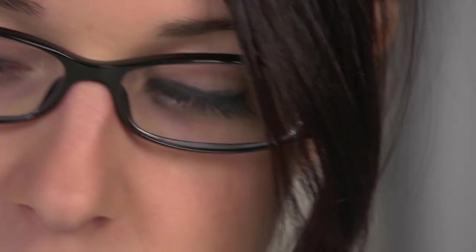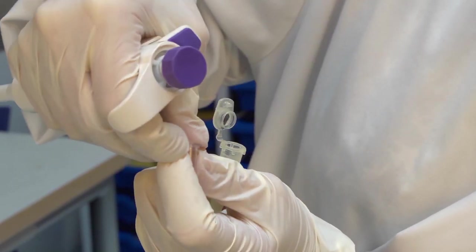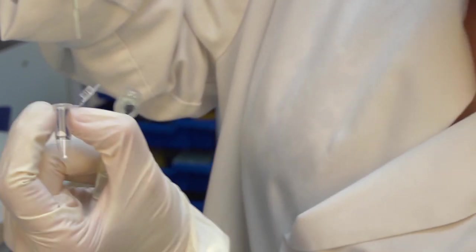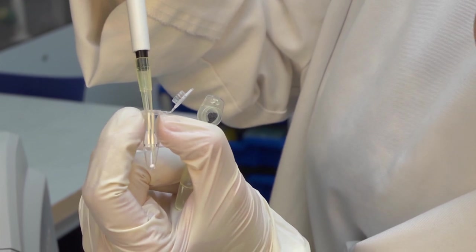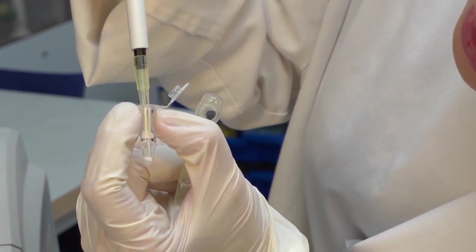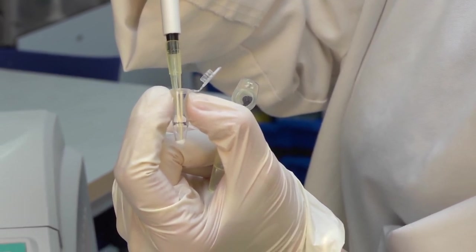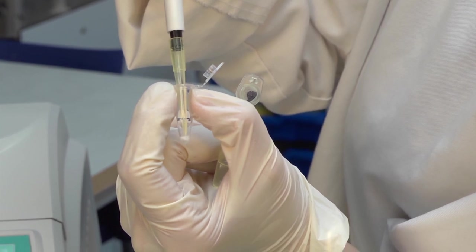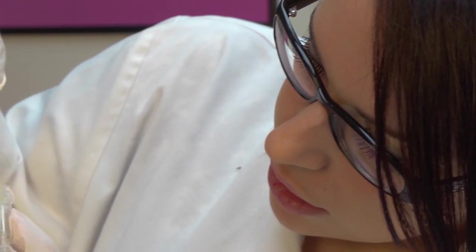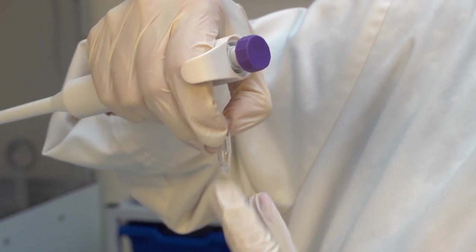To set up the reaction students need to add 22.5 microlitres of the primer mix. Simply pipette that out and add it carefully to the bead. Once you add the liquid to the bead it will start to dissolve, and if you carefully pipette up and down you'll see that it dissolves. Be careful not to add any bubbles. If you do get a bubble just give the tube a quick flick.